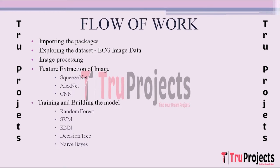The next step is training and building the model. After feature extraction, we proceed to train machine learning models on the extracted features. The first algorithm is Random Forest, an ensemble learning algorithm that combines multiple decision trees to make predictions. Each tree independently predicts the class and the final prediction is determined by voting or averaging. Random Forest is known for its robustness against overfitting and its ability to handle high-dimensional data, making it an ideal choice for classification tasks.